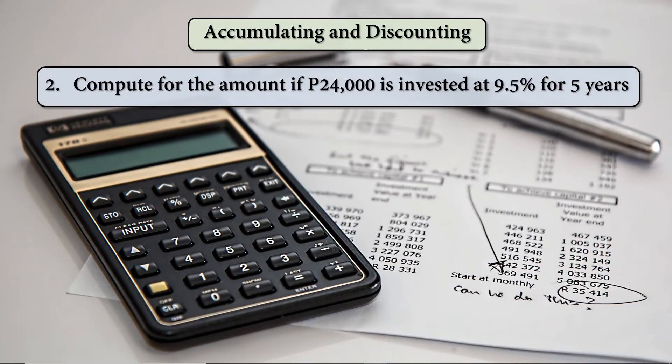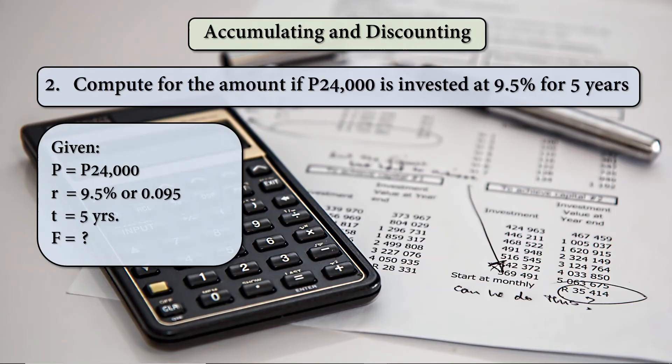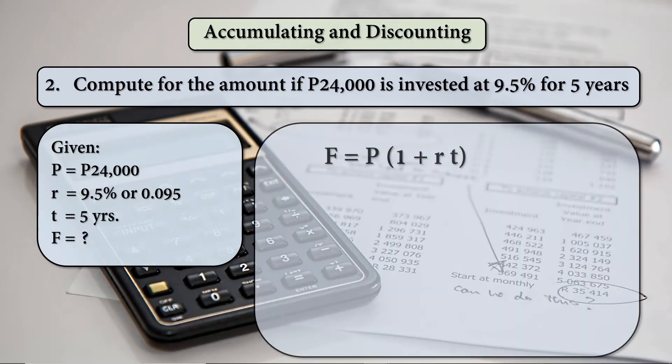For number two example: compute for the amount if 24,000 is invested at 9.5% for 5 years. For the amount, meaning F is what we need to solve. The three given values are: 24,000 for P, R is 0.095, and T is 5 years.